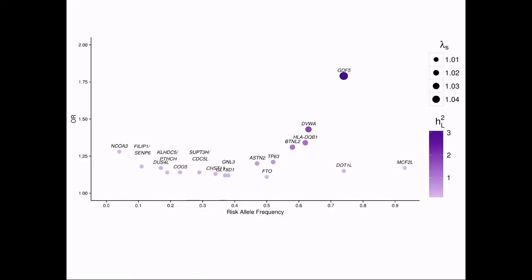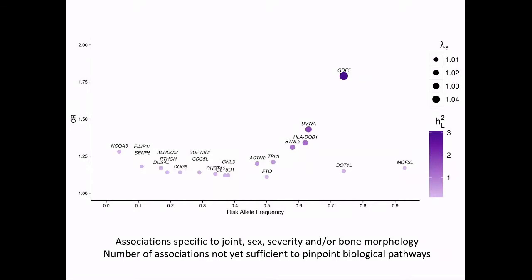But to date — and this is probably an accurate reflection of what we knew about the genetic underpinning of osteoarthritis a couple of years ago — we weren't doing very well. I'm showing here the established, robustly replicating loci or variants annotated by their closest gene, as a function of risk allele frequency and effect size. Commensurate with osteoarthritis being a common complex disease, they're all common in frequency with small to modest effect sizes. These associations are specific to joint, sex, severity, and/or bone morphology, and by no means are they sufficient to pinpoint biological pathways.